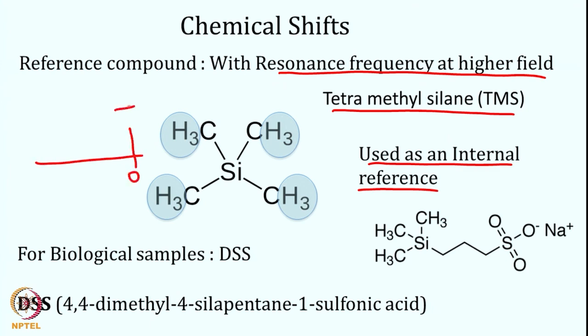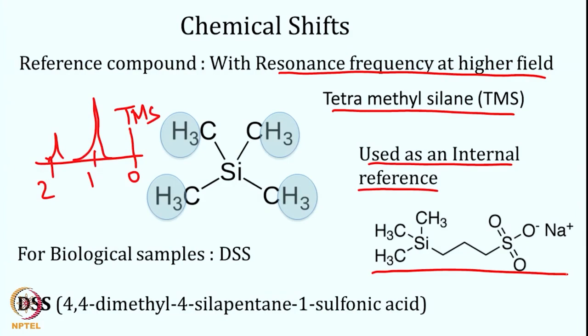TMS can be dissolved in many organic solvents; however, it is not very soluble in water. Therefore, for protein experiments, TMS is not preferred as an internal reference. Instead, DSS — 4,4-dimethyl-4-silapentane-1-sulfonic acid, a sodium salt — is used, as it is water soluble and similarly has methyl groups providing high electron density. Internal references must be inert compounds that do not interact with or cause any perturbation to the compound of interest.